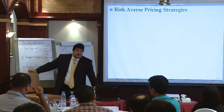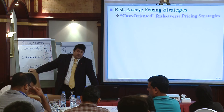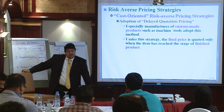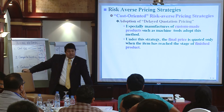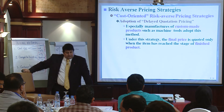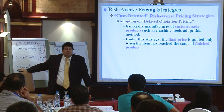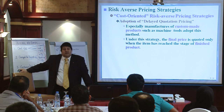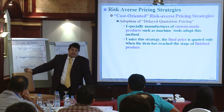What if you make a mistake? Risk-averse pricing strategies. One cost-oriented approach is delayed quotation pricing, especially for manufacturers of custom-made products like machine tools. Under this strategy, the final price is quoted only when the item has reached the stage of finished product. Builders use this — they quote $300,000 but charge $500,000 at the end. Lawyers still do this too: you go to a lawyer with a small problem, and 20-30 years later you are still paying.